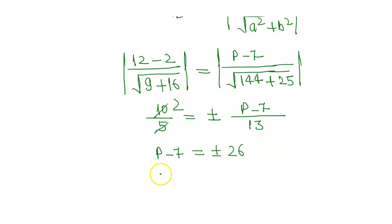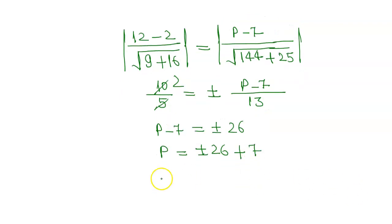Solving this equation, p = 7 ± 26. This gives us two values: p = 33 and p = -19.